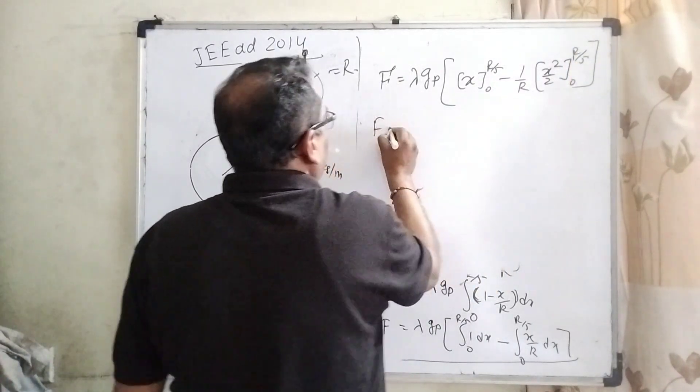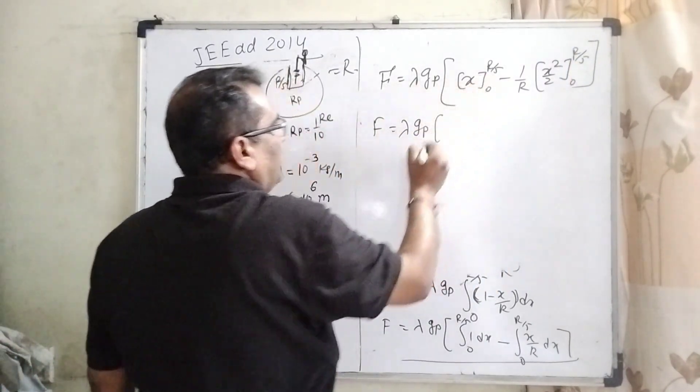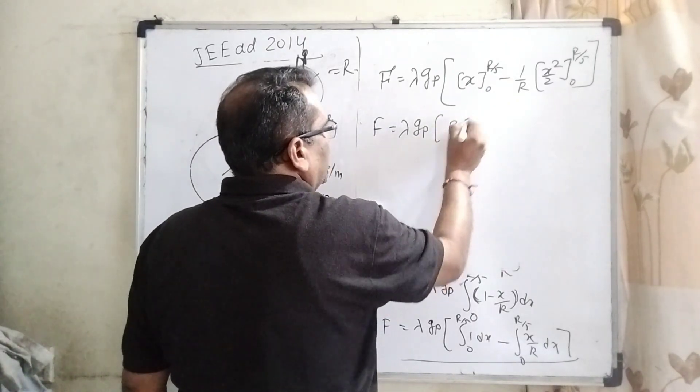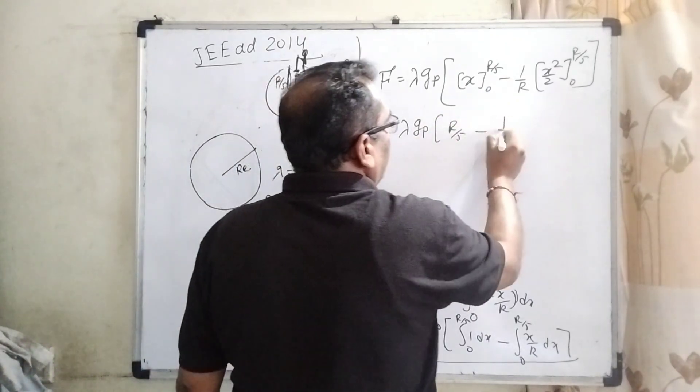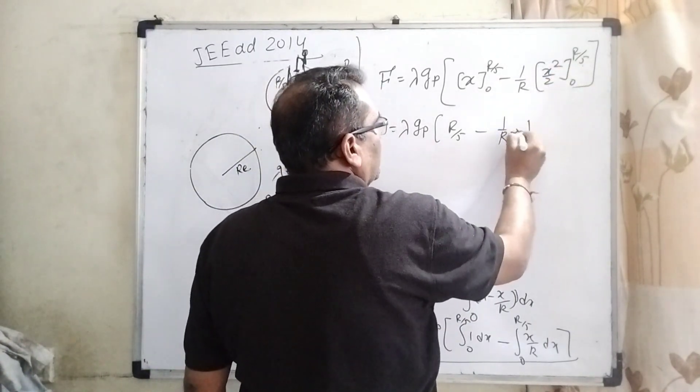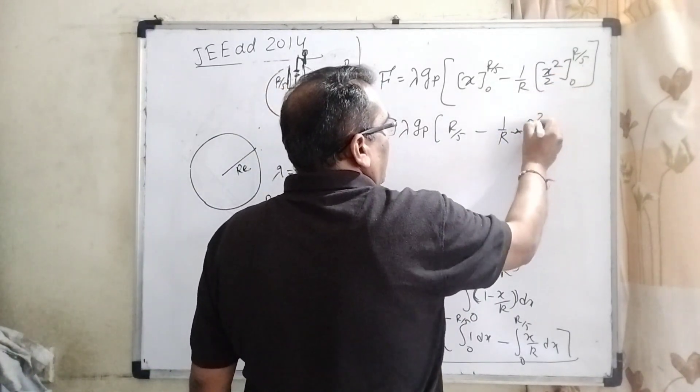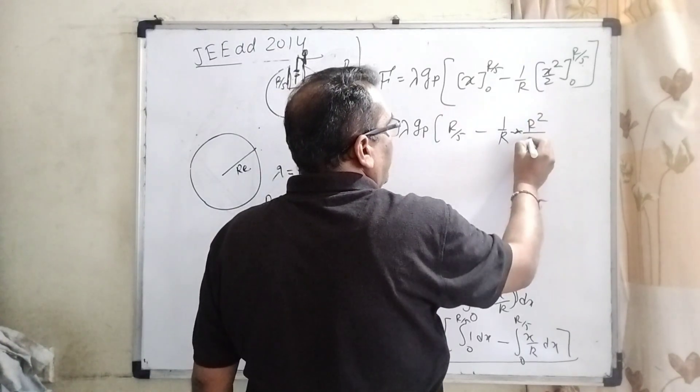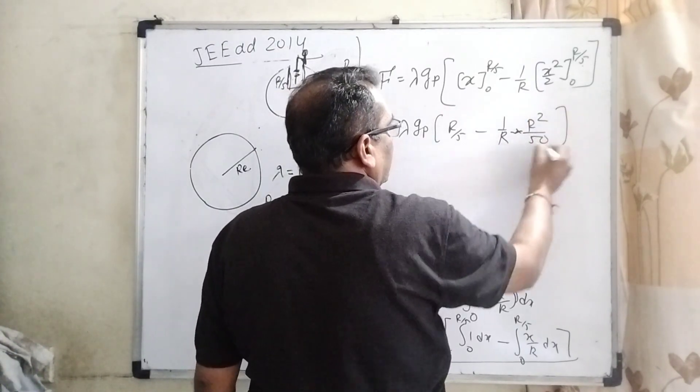Then, f equal to lambda gP, substitute the value of limit, R by 5, 1 by R. Now, here R by 5 square, R square, 25, 25 to the 50.